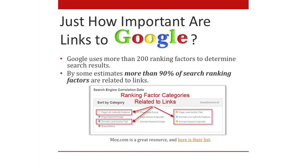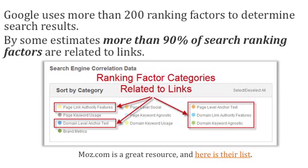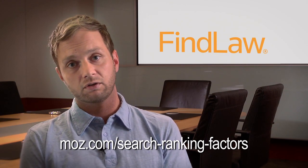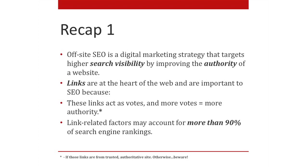Just how important are links to Google? Google uses more than 200 ranking factors to determine search results. By some estimates, more than 90% of those ranking factors are related to backlinks. Moz.com uses 10 categories when calculating its 200 ranking factors — half of them are directly related to links, and the others have an attenuated relation to links. Moz.com is a great resource, and I recommend every one of you go read their 200 ranking factors. To recap: off-site SEO improves authority through links, and link-related factors may account for more than 90% of search engine rankings.